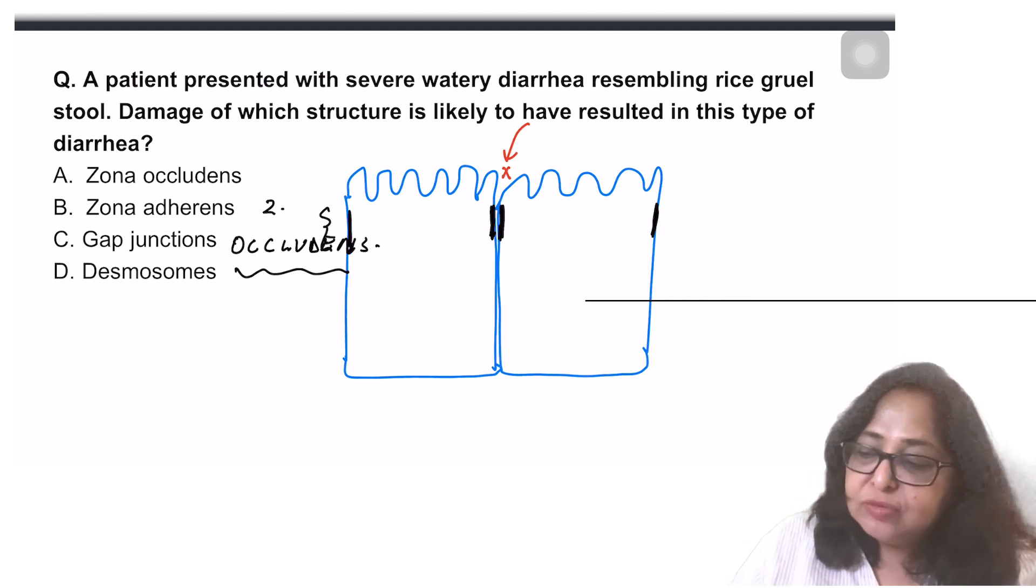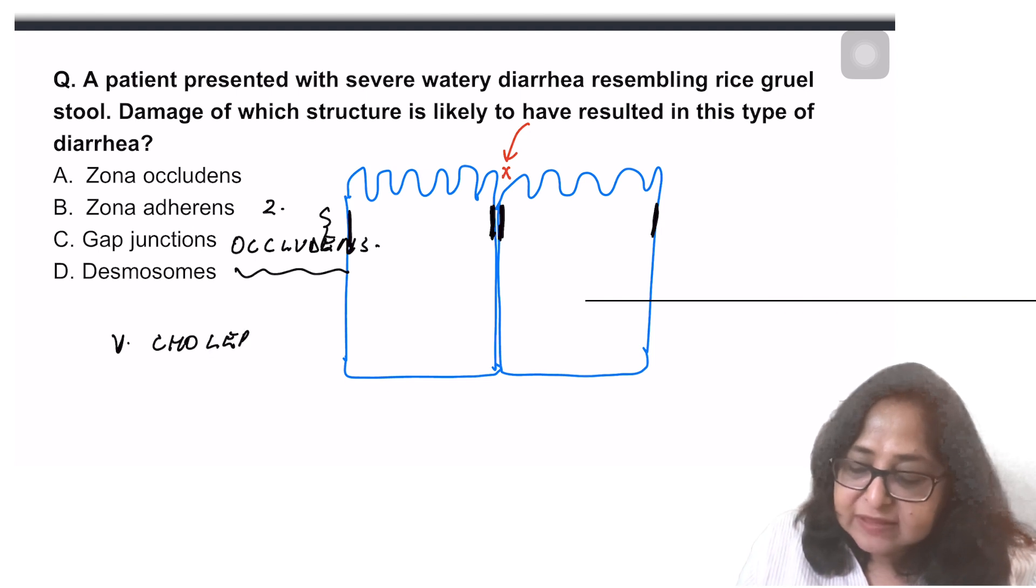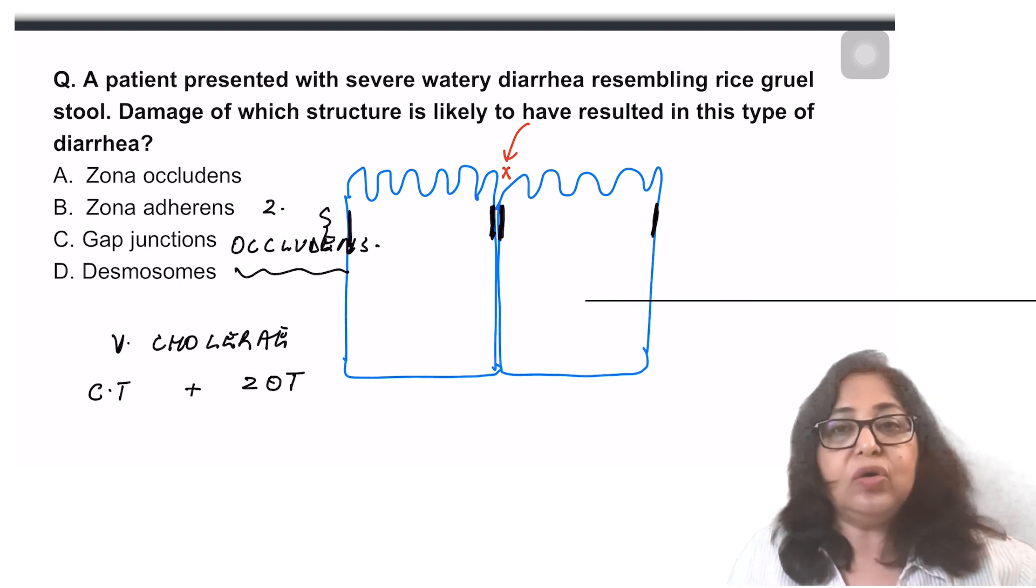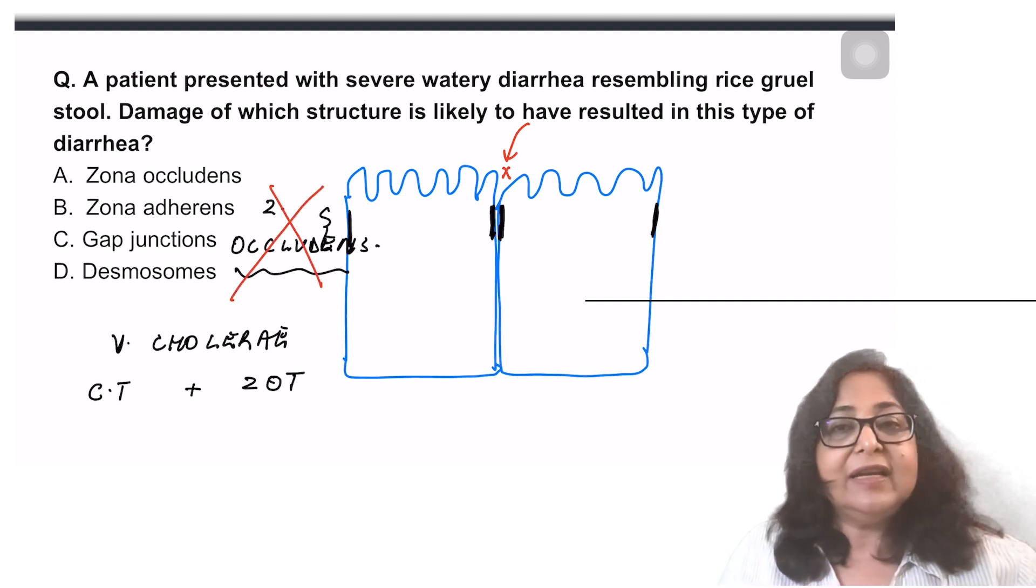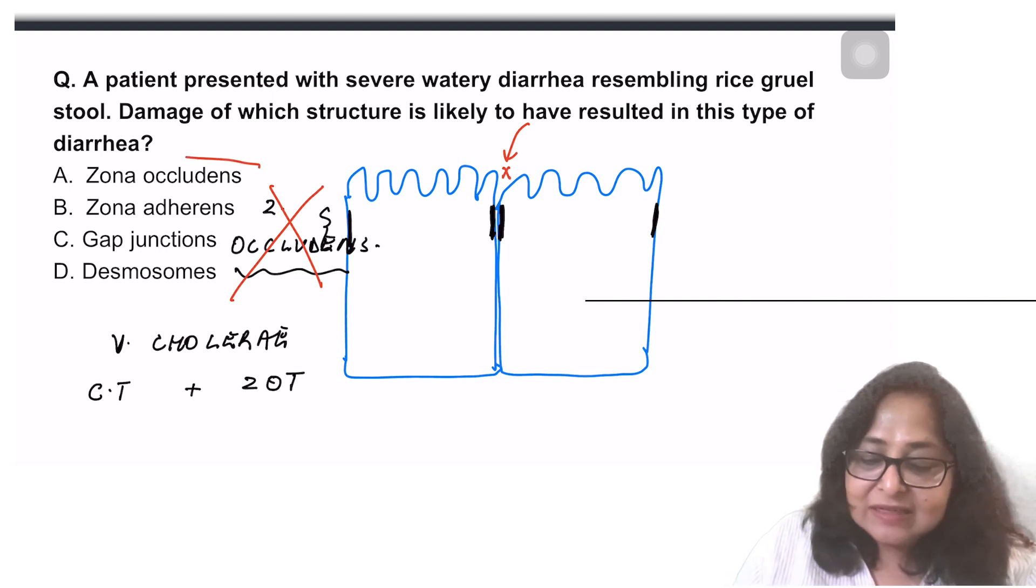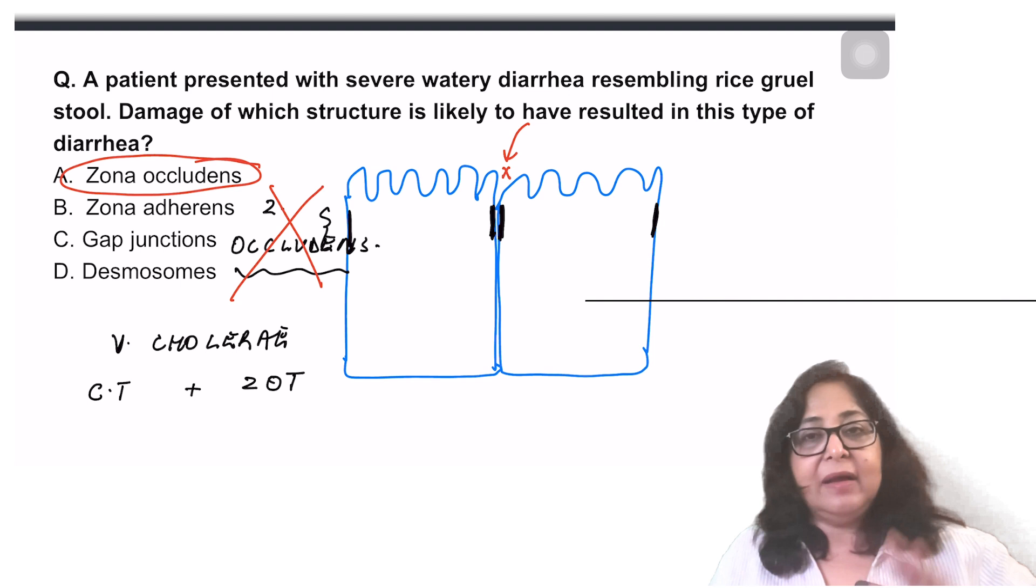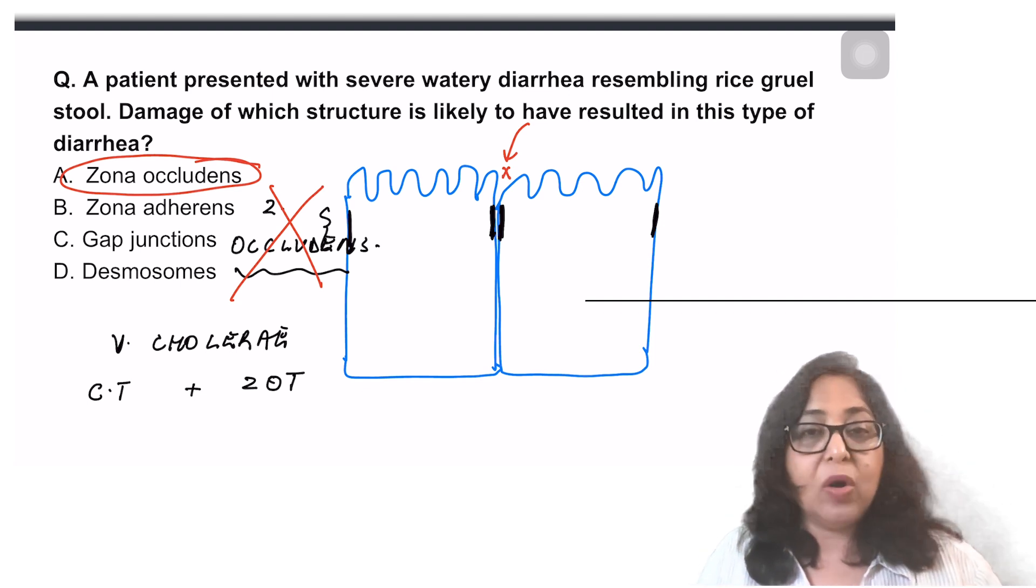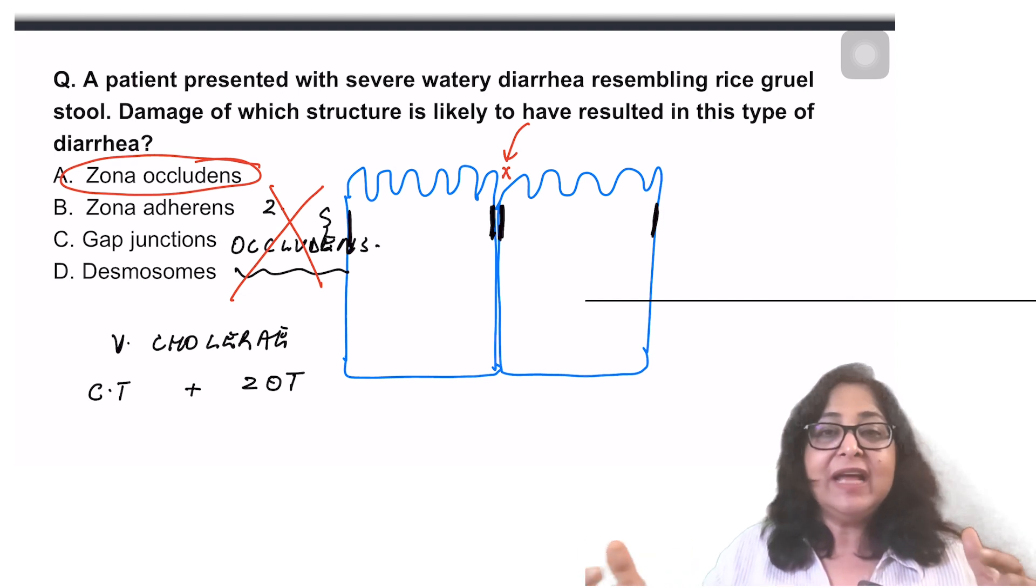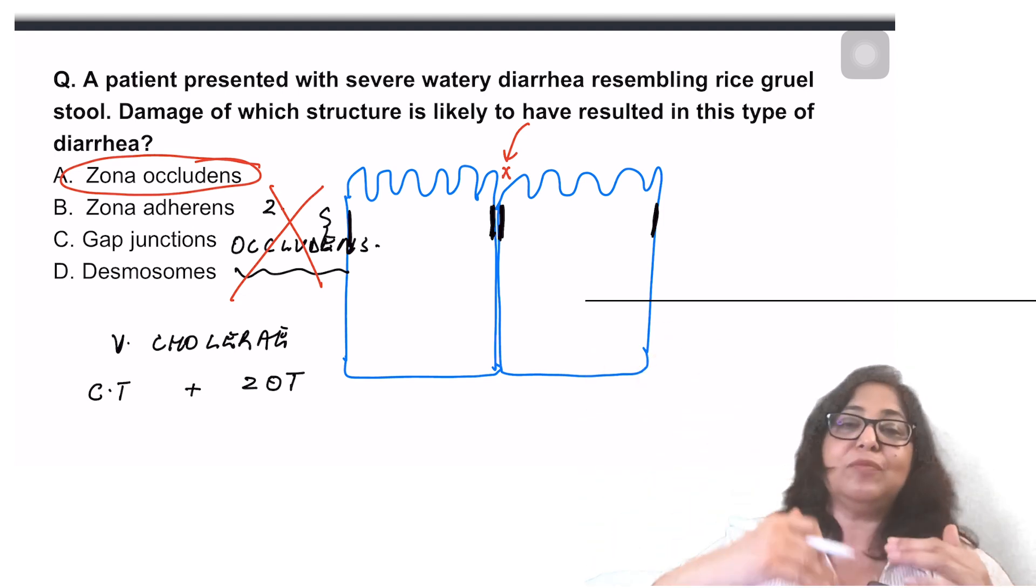Rice water stools gives you an idea that this is cholera. Vibrio cholera secretes two types of toxins. There is a cholera toxin and a zonula occludens toxin. Zonula occludens toxin will act over these tight junctions or the zonula occludens and that is how there is paracellular movement of substances, including water. And so there is rice water stools, a severe watery diarrhea. When I say paracellular movement, that means not only from the lumen to the blood vessels, but also from the blood vessels to the lumen.